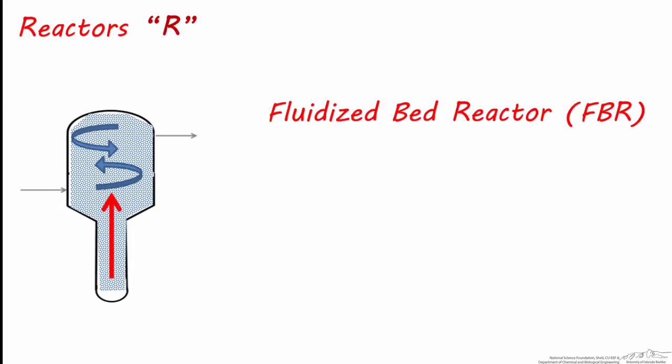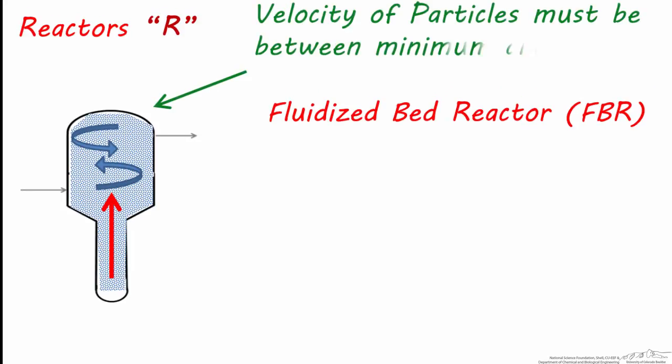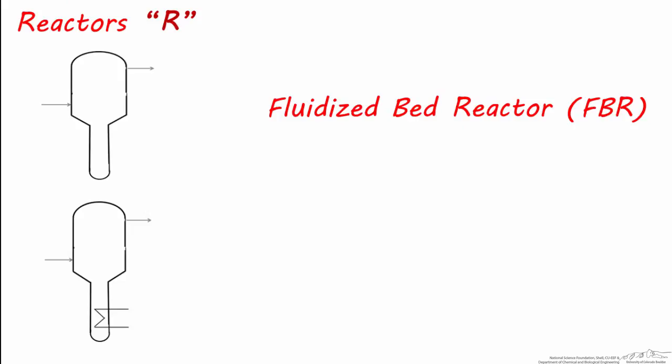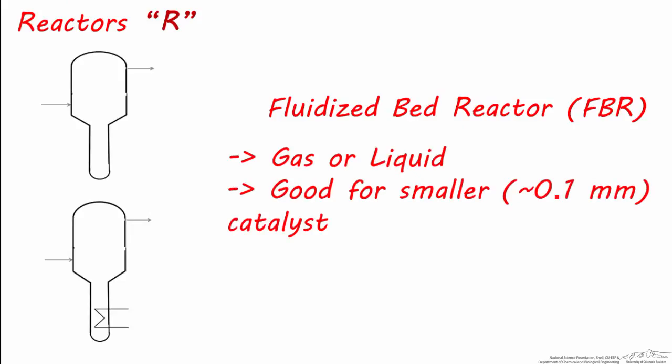For this to occur effectively, the catalyst particles must be traveling at greater than a minimum velocity, but less than the maximum fluidizing velocity. This type of reactor can accommodate liquids and gases and is best to use on smaller catalyst particles in the range of 0.1 millimeters. This type of reactor is very common in oil refineries or plastic manufacturing processes.